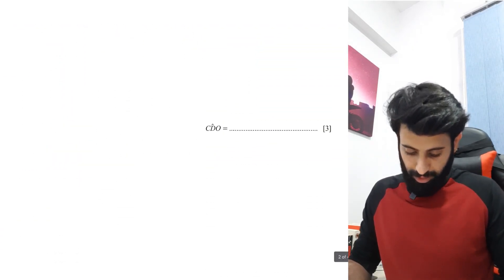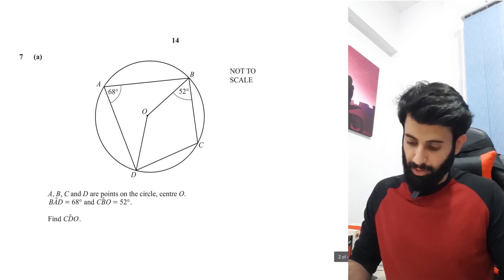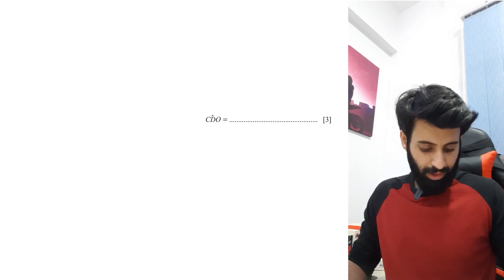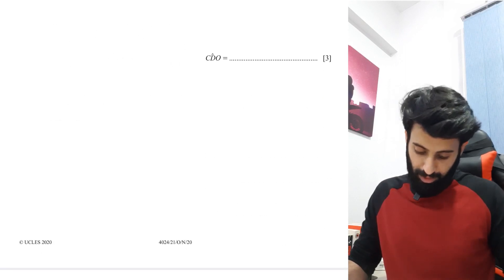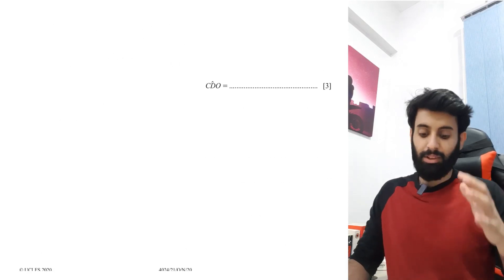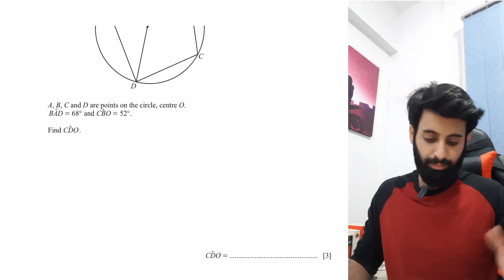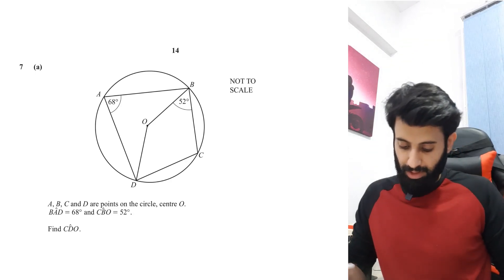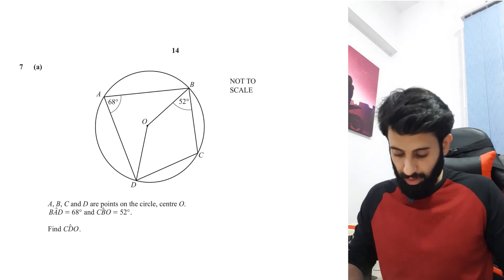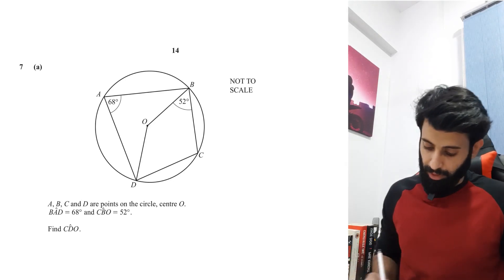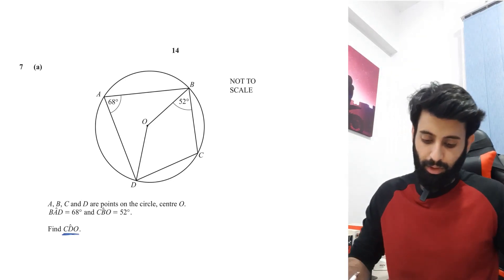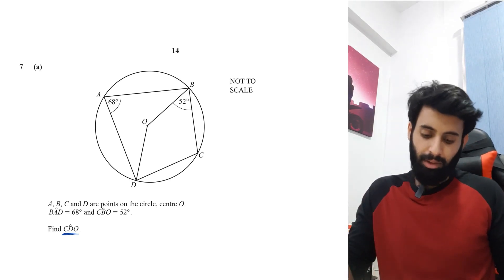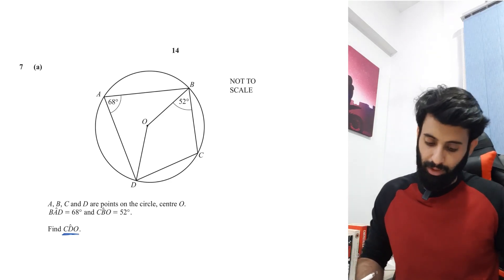Now we move on to another question from October November 2020, Paper 2 Variant 1. This type of question gives you one problem worth up to three marks and requires a couple of properties to reach the final answer. A, B, C and D are points on the circle with center O. Angle BAD is 68 degrees, angle CBO is 52 degrees. Find angle CDO.